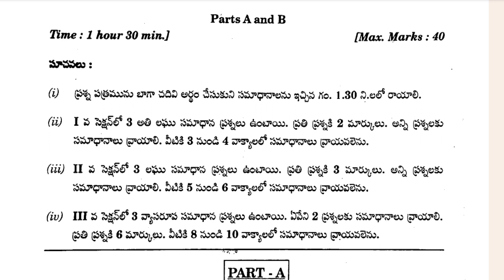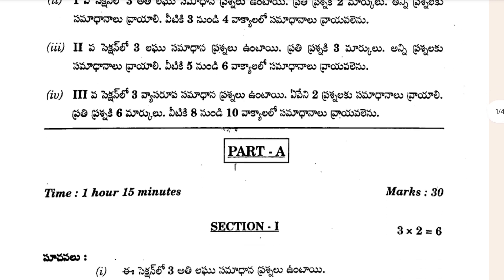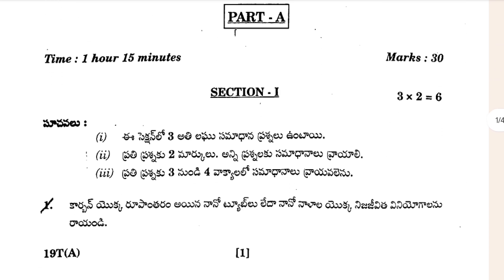This paper carries 40 marks. In science, there is bio and physics — bio carries 40 and physics carries 40. So this one carries 40 marks. In those 40 marks, part one carries 30 marks and part two carries 10 marks. So 30 marks for physics and 30 marks for bio, that's 60, and 20 marks — 10 for physics and 10 for bio.